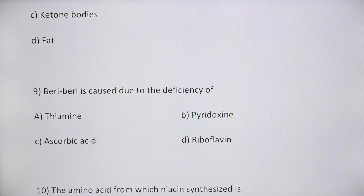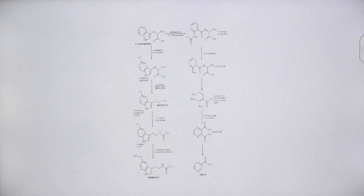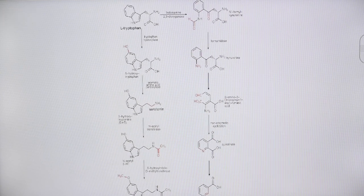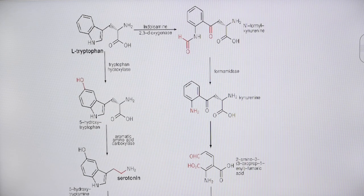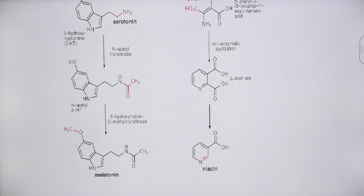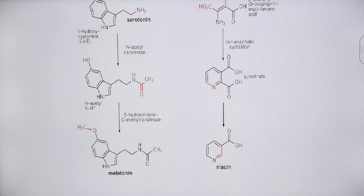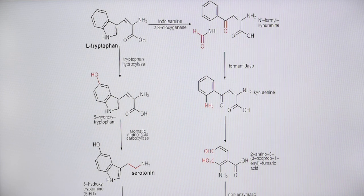Final question: the amino acid from which niacin is synthesized — options are tyrosine, tryptophan, threonine, and histidine. Niacin is vitamin B3 or nicotinic acid, and its deficiency leads to pellagra. As shown in the flow chart, tryptophan undergoes a cycle of reactions to form niacin. Tryptophan is the mother molecule and is the amino acid essential for synthesis of niacin (vitamin B3 or nicotinic acid).